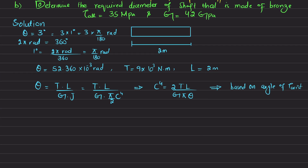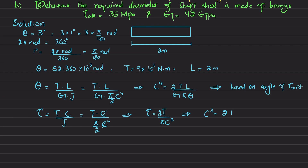We can also find the radius using the maximum shearing stress due to torsion: τ = TC/J. For a solid circular shaft, J = π/2 · C⁴, so one C cancels giving τ = 2T / (π · C³). Solving for C: C³ = 2T / (π · τ). This is the radius based on the allowable shearing stress.